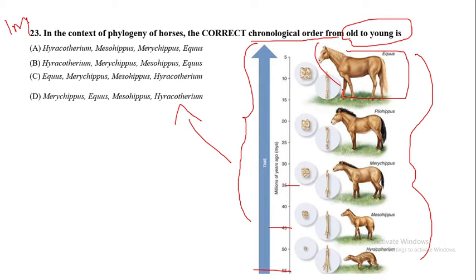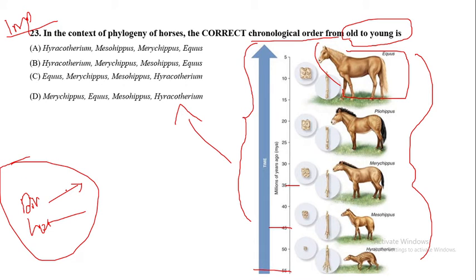Such evolutionary chronology questions are commonly asked in this exam — sometimes for dinosaurs, sometimes for horses — so keep taxonomy in mind. From the image, the correct order from old to young is: Hyracotherium → Mesohippus → Merychippus → Pliohippus → Equus. Option A is the correct answer.